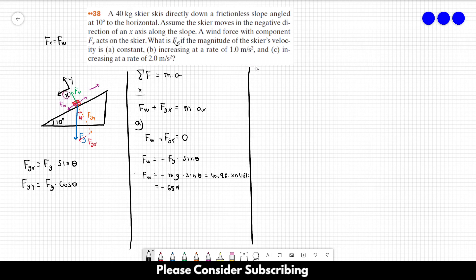For letter B, we know that acceleration is increasing at a rate of 1 meter per square second. So now we have that Fw plus Fgx is equal to mass times 1. So Fw is equal to mass times 1 minus Fgx. So Fw is equal to 40 minus 40 times 9.8 times the sine of 10 degrees. And this gives us minus 28 newtons. So the force points upwards as well.